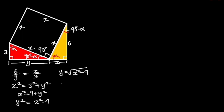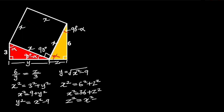To find the value of z, let's consider the yellow triangle. From Pythagoras' theorem, x squared is equal to 6 squared plus z squared. 6 squared is 36, so x squared equals 36 plus z squared. Making z squared the subject gives us z squared equals x squared minus 36. Taking the square root of both sides: z equals the square root of x squared minus 36.